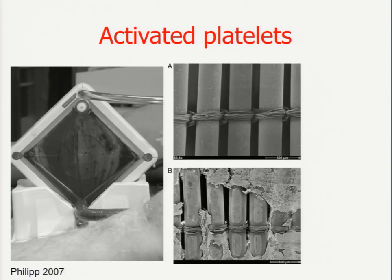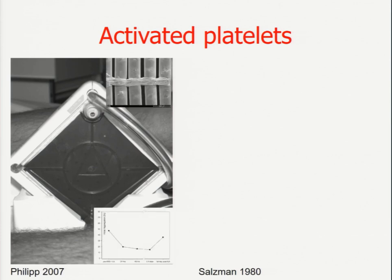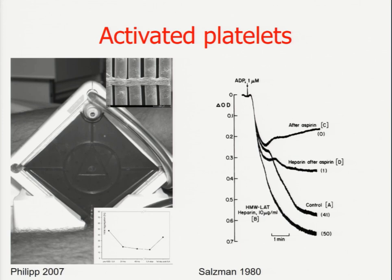You can see activated platelets — those white stripes — inside the oxygenator unit. This is what a brand new device looks like, and that's the dissection after usage: there is a lot of platelet formation inside these fibers. In some cases you can prevent this by adding small amounts of aspirin. When platelets are activated by ADP, aggregation is even better if you add small amounts of heparin — but if you give aspirin, you can bring it back up. By doing so, you will save platelets, which also means you will need fewer platelet transfusions.